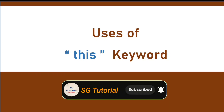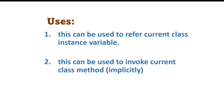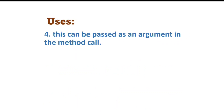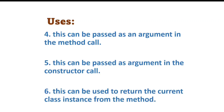There are six uses of this keyword. This can be used to refer to the current class instance variable. This can be used to invoke the current class method. This can be used to invoke the current class constructor. This can be passed as an argument in the method call and in the constructor call. This can be used to return the current class instance from the method.